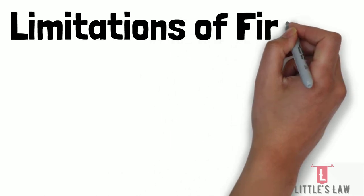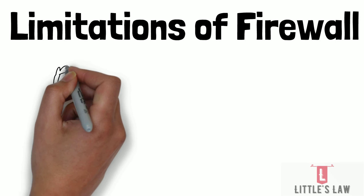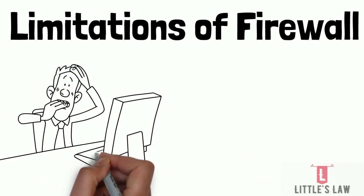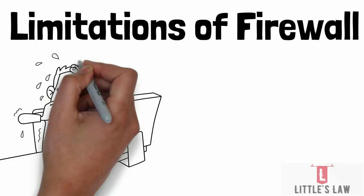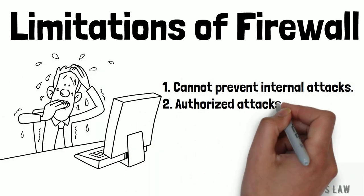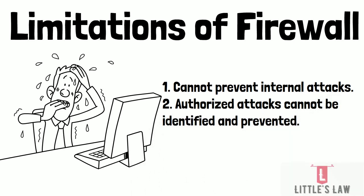Firewall has one key limitation: it cannot prevent internal attacks. Once a Trojan or any vulnerability enters the system, it cannot be prevented. Authorized attacks cannot be identified and prevented by firewalls, and some software firewalls can affect system performance as they occupy RAM resources and consume more processing power.